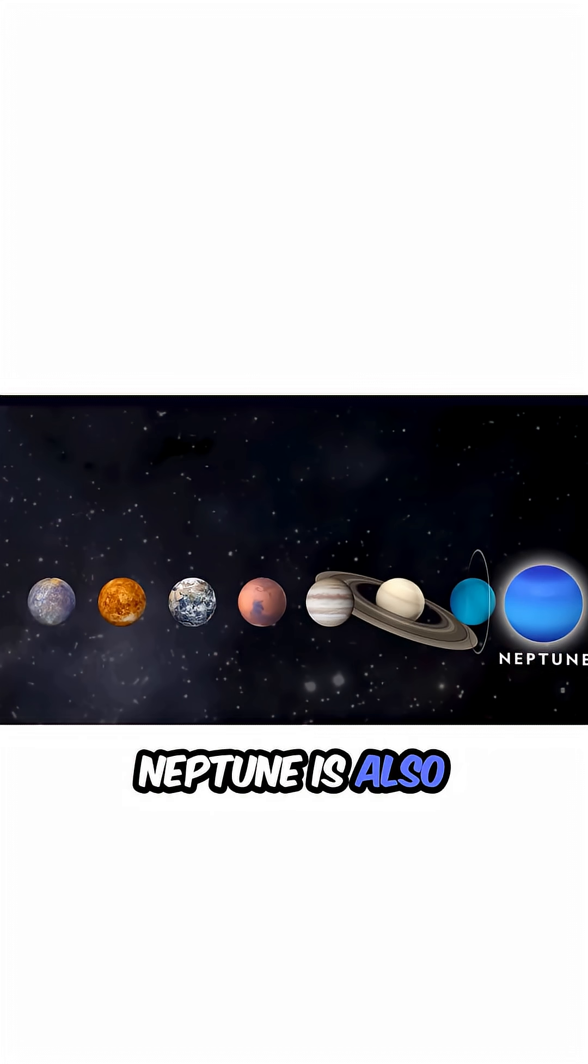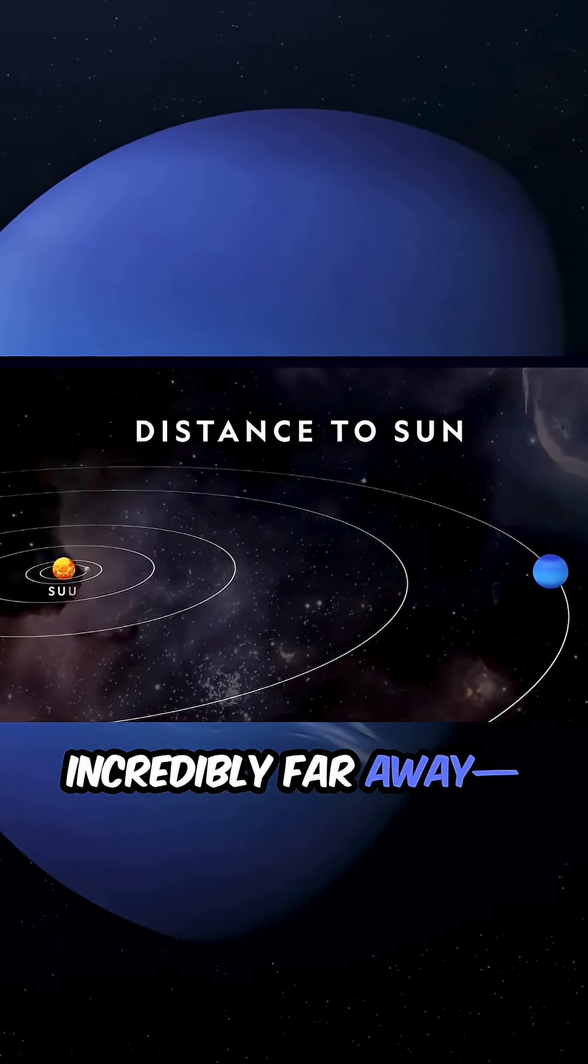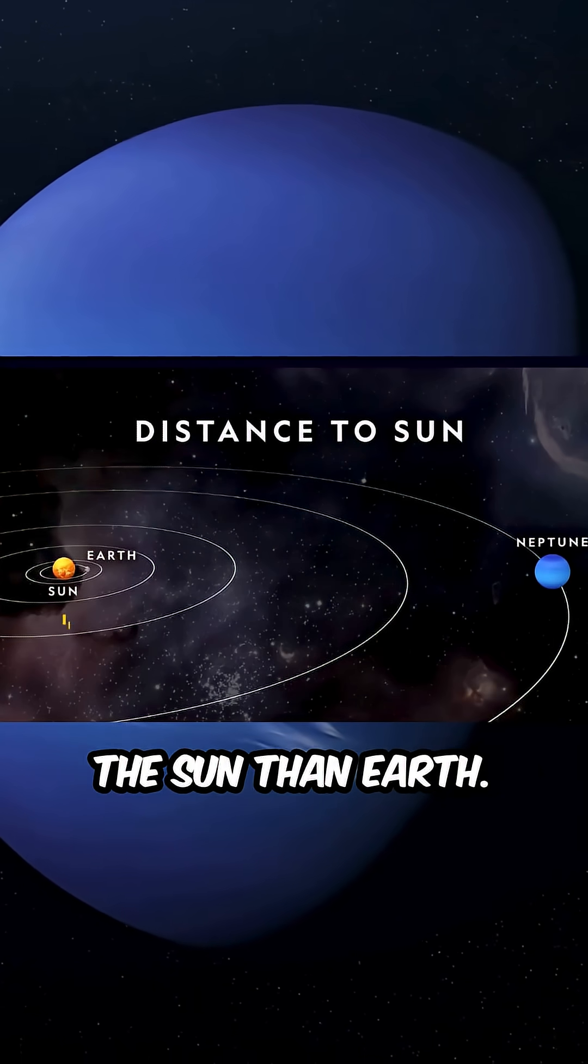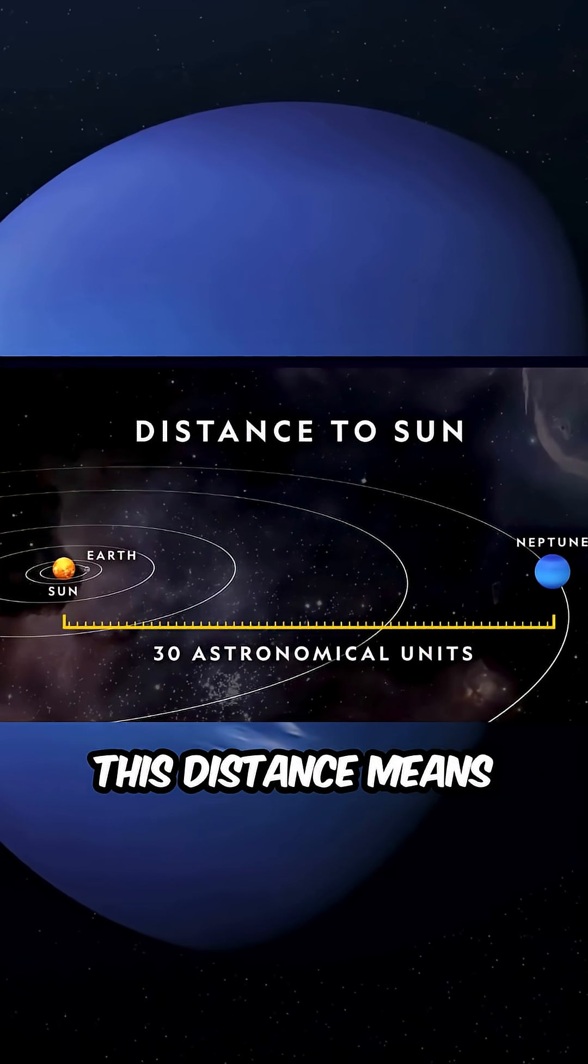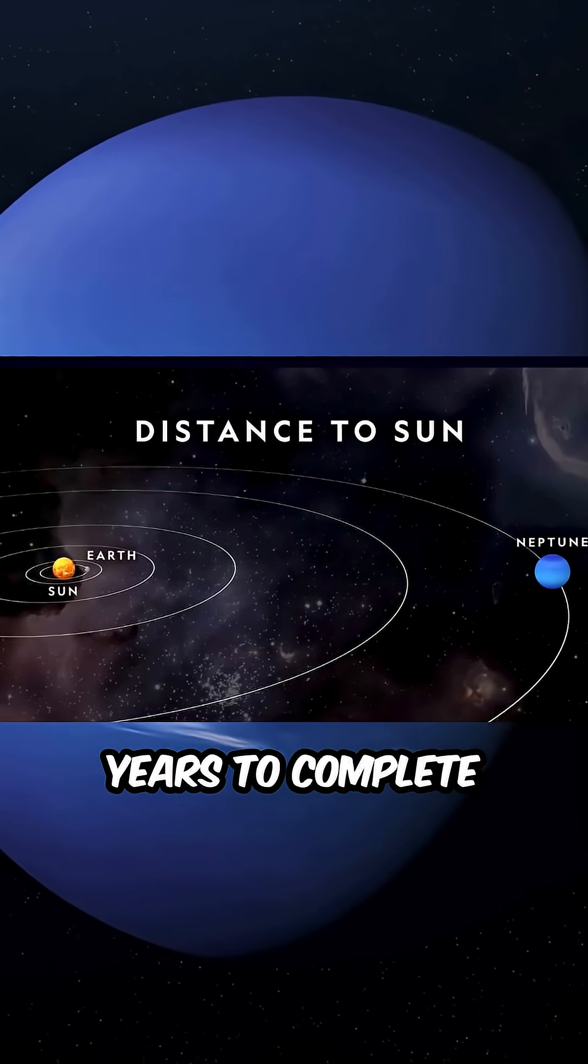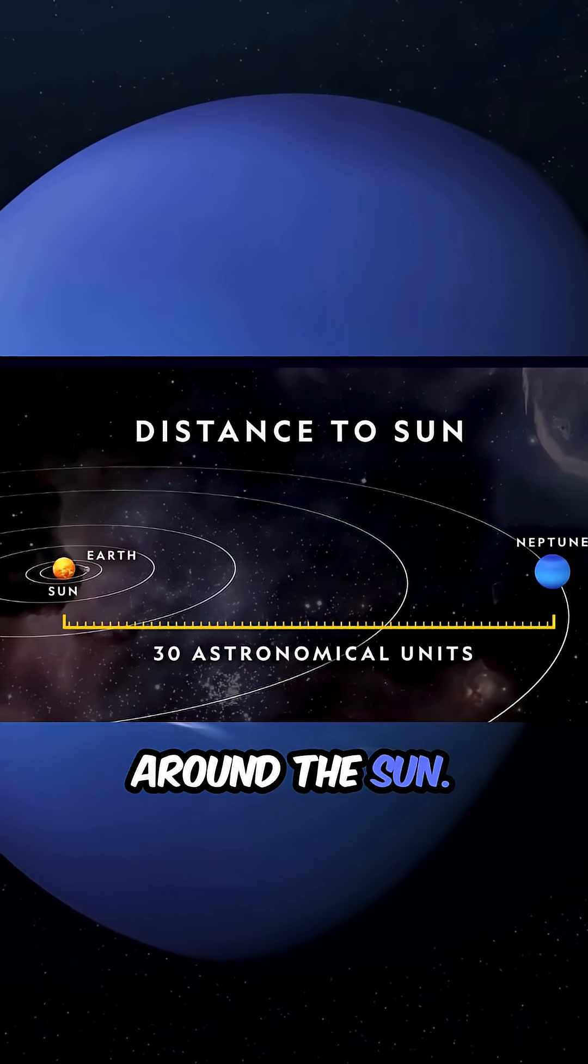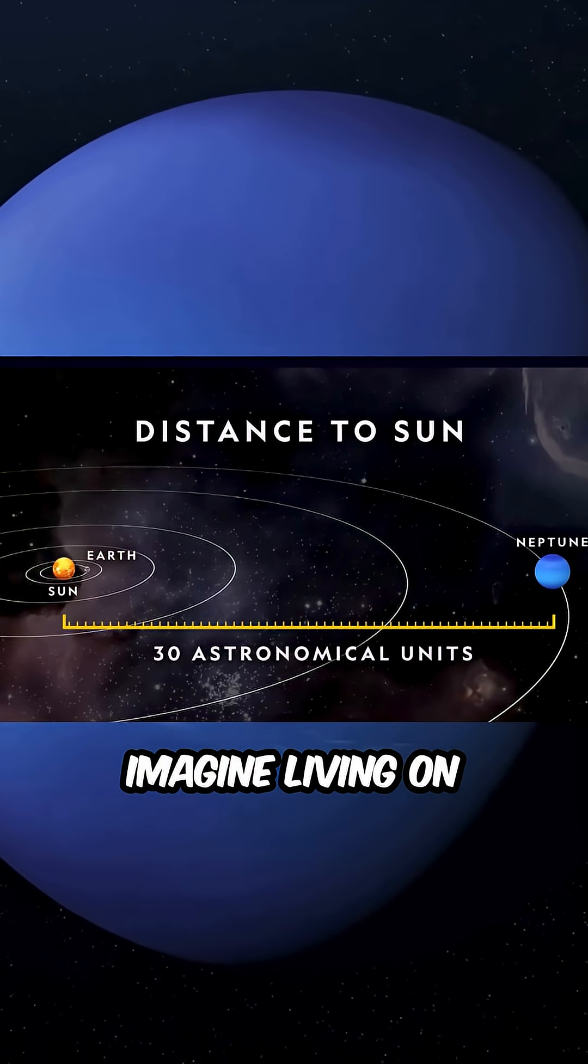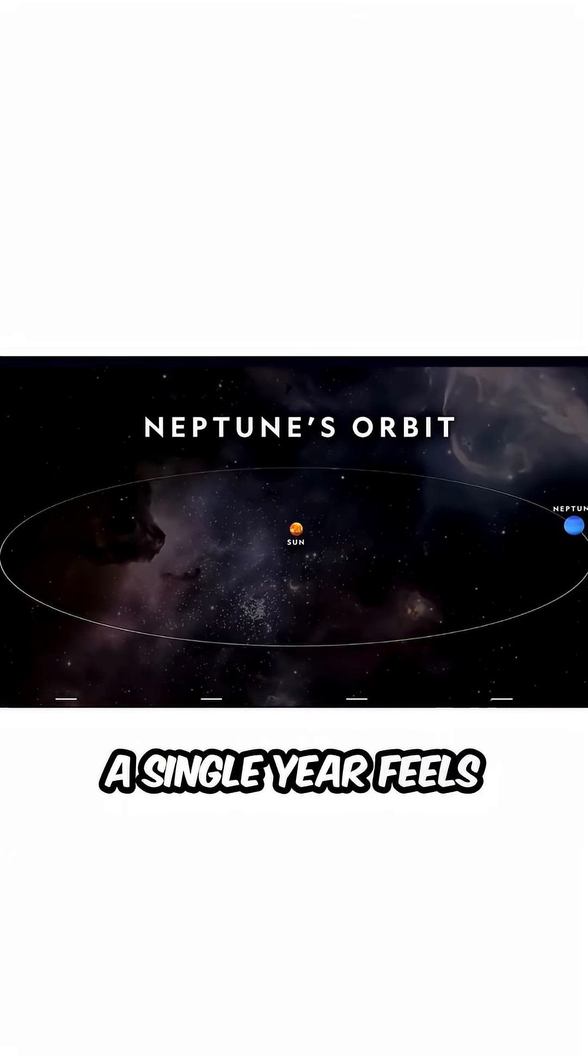Neptune is also incredibly far away, about 30 times farther from the Sun than Earth. This distance means that it takes a staggering 165 Earth years to complete just one orbit around the Sun. Imagine living on a planet where a single year feels like a lifetime.